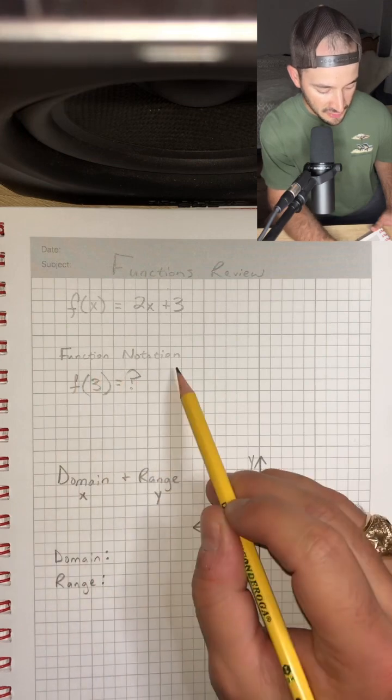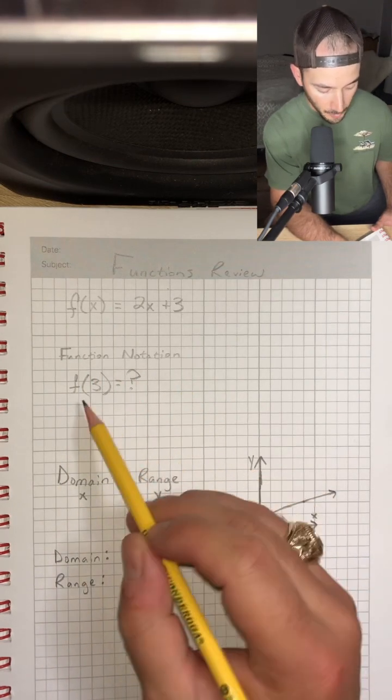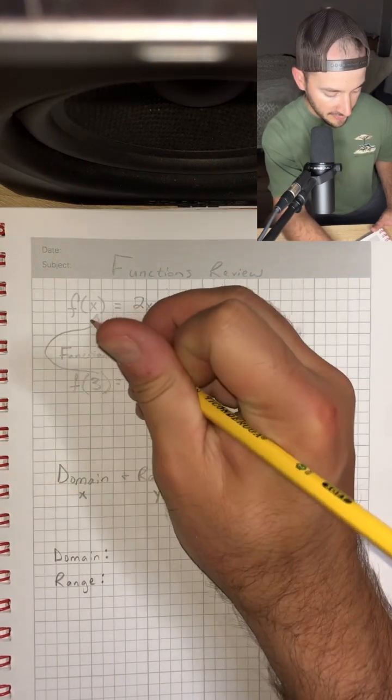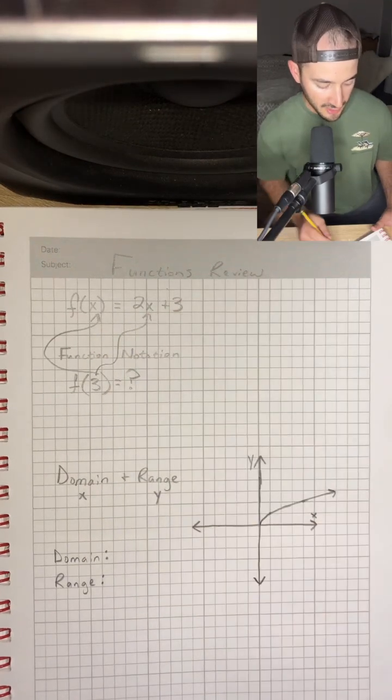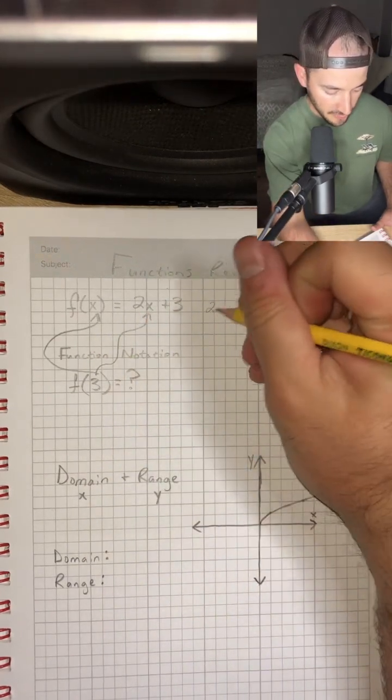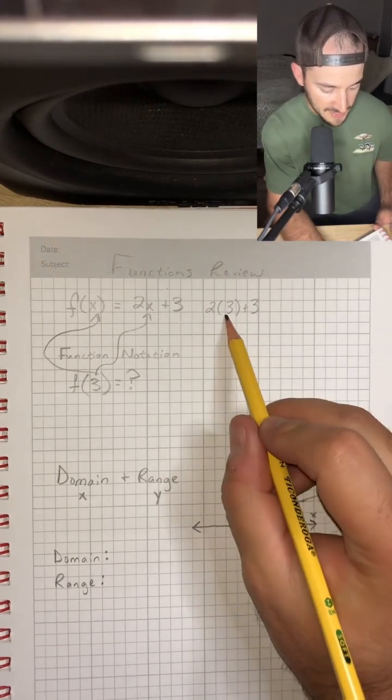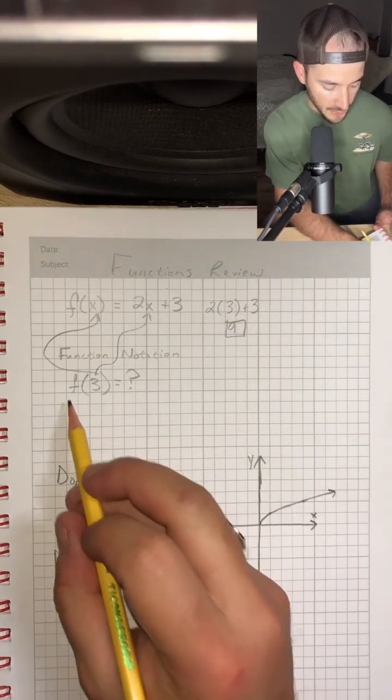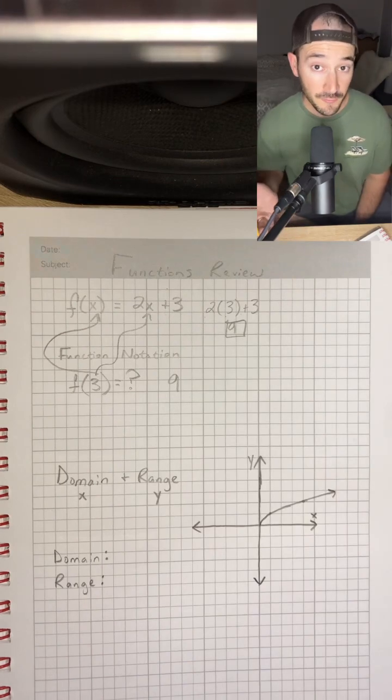So this is called function notation, and this is read as f of 3 is equal to what? Well, f of 3 just means we plug in 3 for x in our function. So we're going to plug that in right there, and so we would have 2 times 3 plus 3. So 2 times 3 is 6, plus 3 is 9. So f of 3 is equal to 9, and that's all you have to do for function notation.